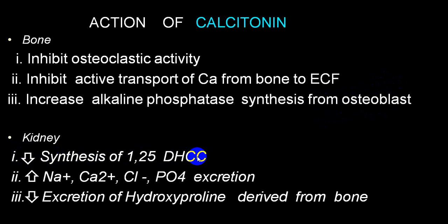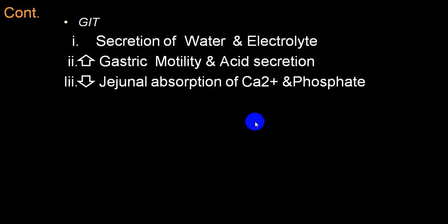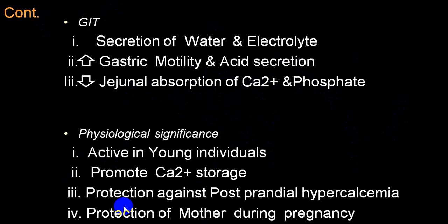Calcitonin inhibits osteoclastic activity, shifting calcium from blood into bone and reducing calcium output from bone into blood. It increases alkaline phosphatase synthesis from osteoblasts, activating osteoblasts. In the kidney, it decreases synthesis of active vitamin D3, increases excretion of sodium, calcium, chloride, and phosphate in urine. It also decreases excretion of hydroxyproline derived from bone matrix. In the GI tract, it decreases absorption of calcium and phosphate. Calcitonin protects against postprandial hypercalcemia and protects the mother during pregnancy.